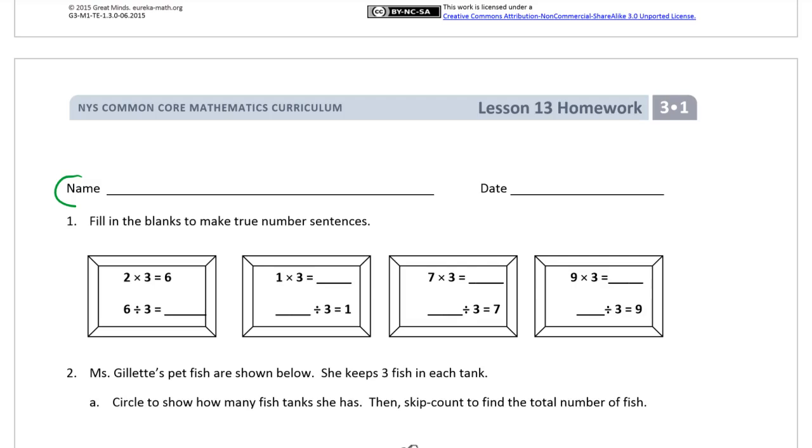The first problem says, fill in the blanks to make true number sentences. We've got our multiplication equation and we're looking for the missing number here. Our quotient is 2. Let's solve the multiplication first. 1 times 3 is 3, and that means 3 divided by 3 equals 1.